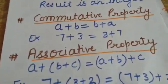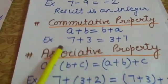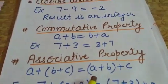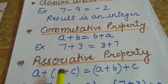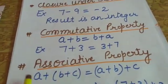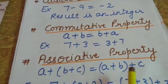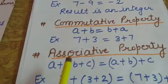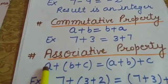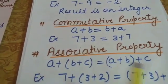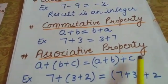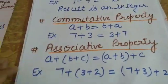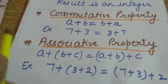The fourth property is associative property. It says a + (b + c) = (a + b) + c. If you are adding the last two integers first and then to the first one, this will be the same as adding the first two integers with the last one. The answer remains the same where a, b, c all belong to integers.